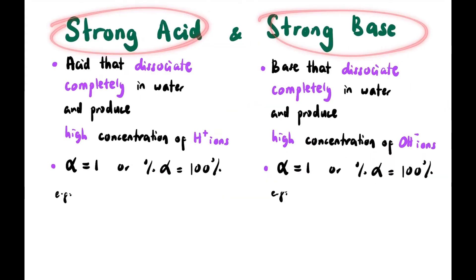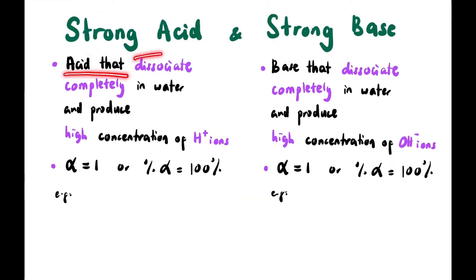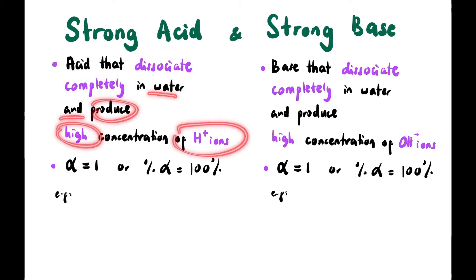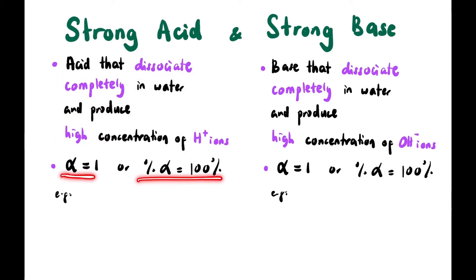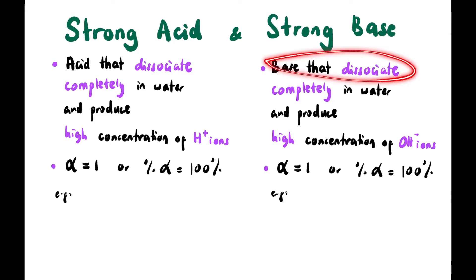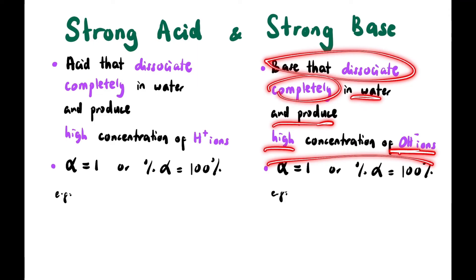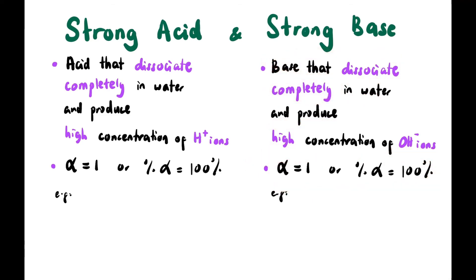Now let's look at strong acid versus strong base. A strong acid is an acid that dissociates completely in water and produces a high concentration of H⁺ ions — its degree of dissociation equals 1, or 100% dissociation. A strong base similarly dissociates completely in water producing a high concentration of OH⁻ ions, with the same degree and percentage of dissociation.